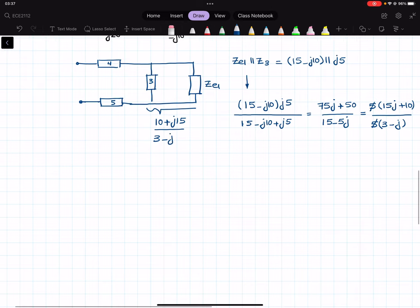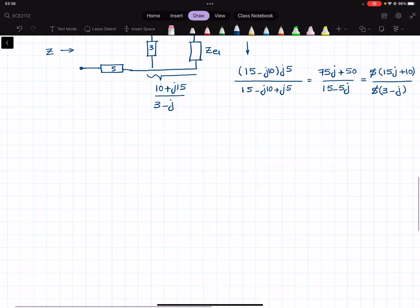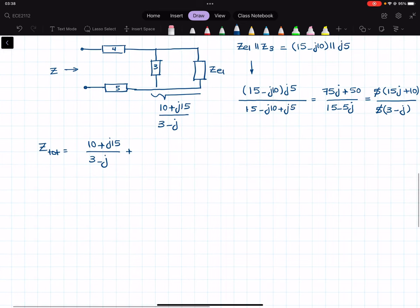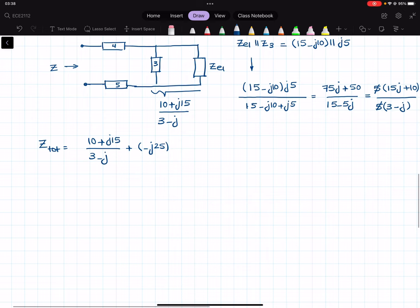Now this parallel that we found over here and Z4 and Z5 are all in series now. So the total Z that I'm looking for, Z total is equal to 10 plus J15 over 3 minus J plus Z4. What was Z4 is negative J25, and Z5 is J20 plus J20.